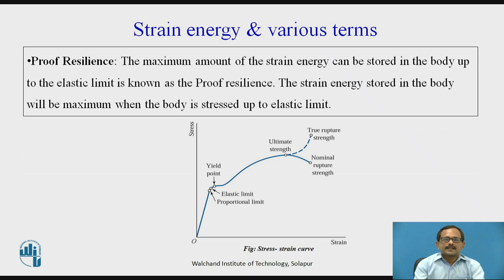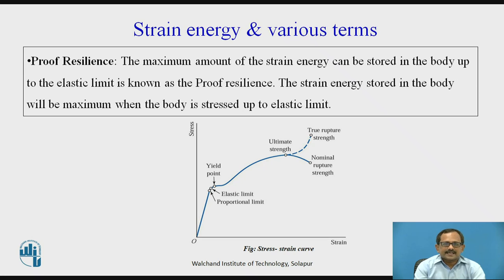Proof resilience: the maximum amount of strain energy that can be stored in the body up to the elastic limit is known as proof resilience. The strain energy stored in the body will be maximum when the body is stressed up to the elastic limit. From the stress-strain graph, within the elastic limit stress is directly proportional to strain. When the body is stressed up corresponding to its elastic limit, the maximum amount of strain energy will be stored in the body — that is proof resilience.